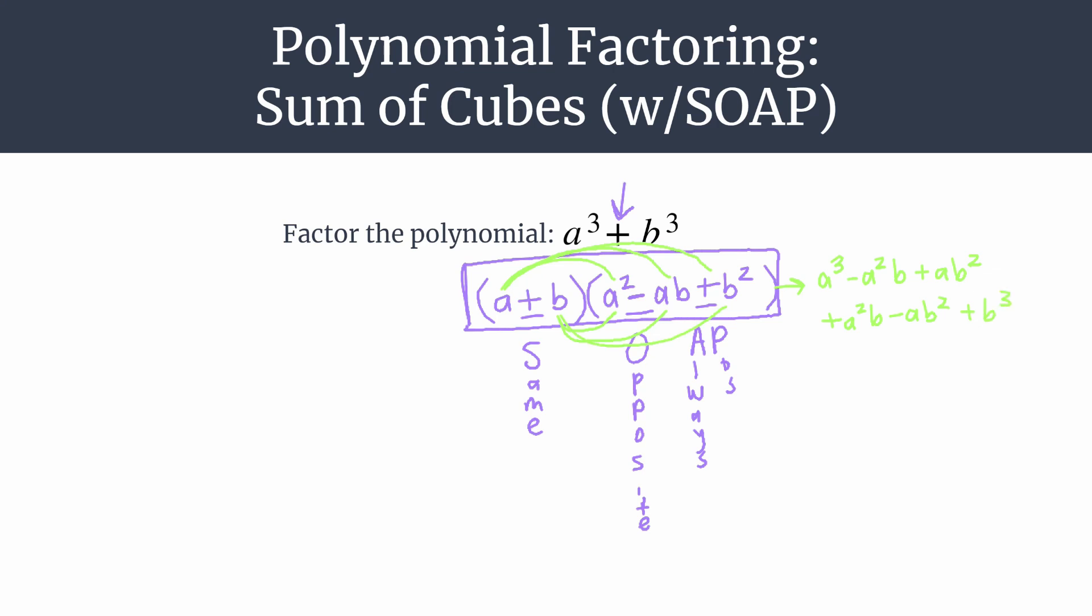So you see, we have several terms that cancel here. We have the a²b terms, the positive and negative, and the ab² terms. Those cancel to zero. And we're left just with a³ + b³.